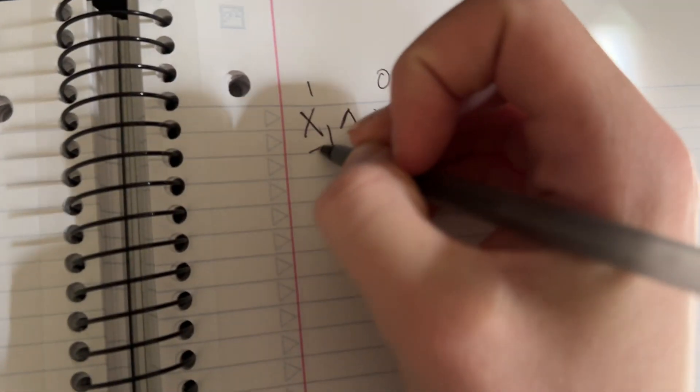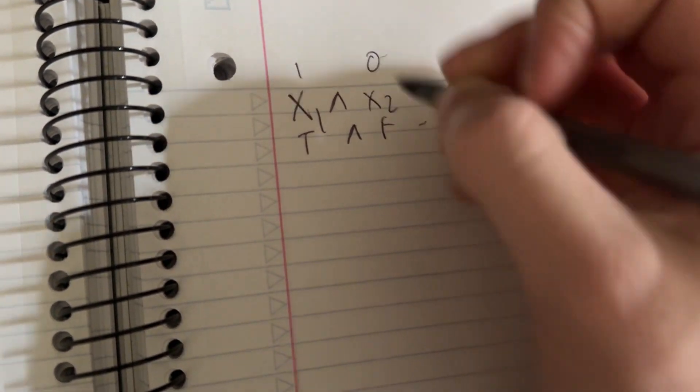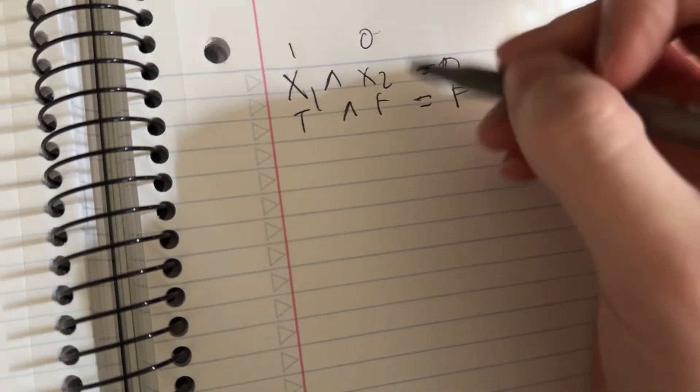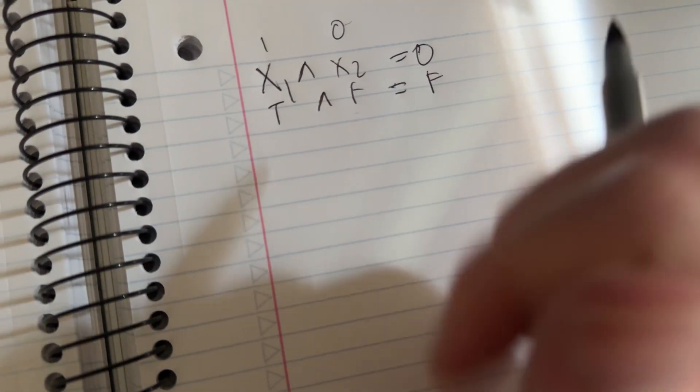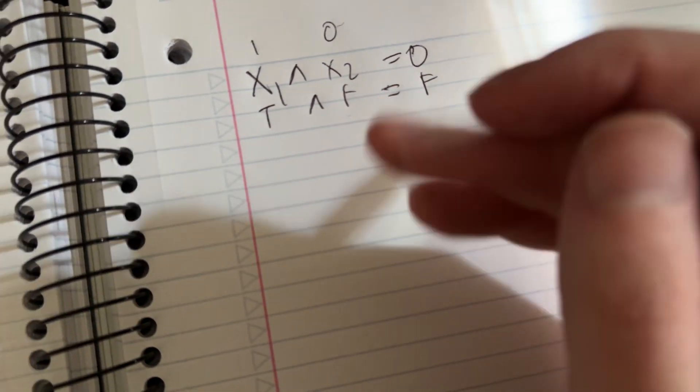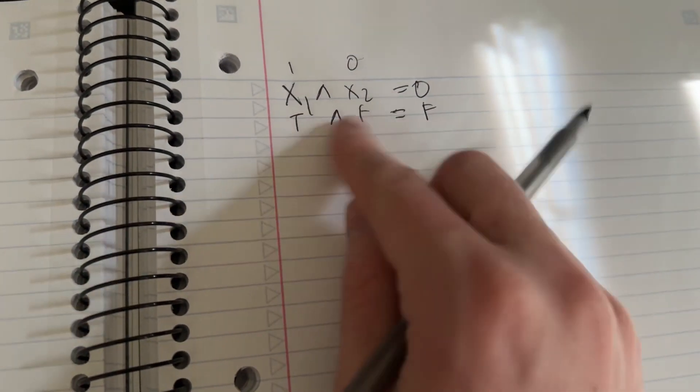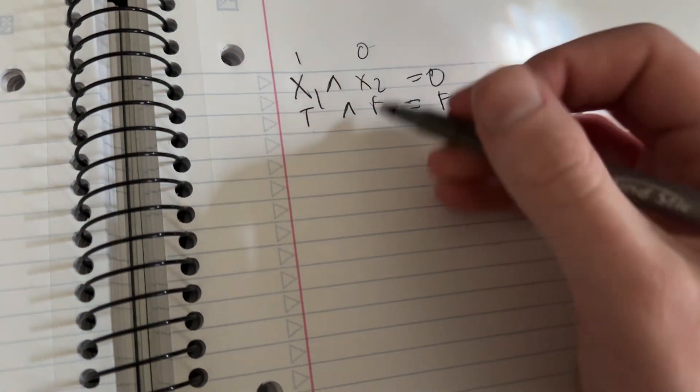Essentially, how do we think about this is we say true and false equals false because they have to be both true in order to go through. If they're both false, they're still false. They have to only be true on both sides. That's how an and gate works.